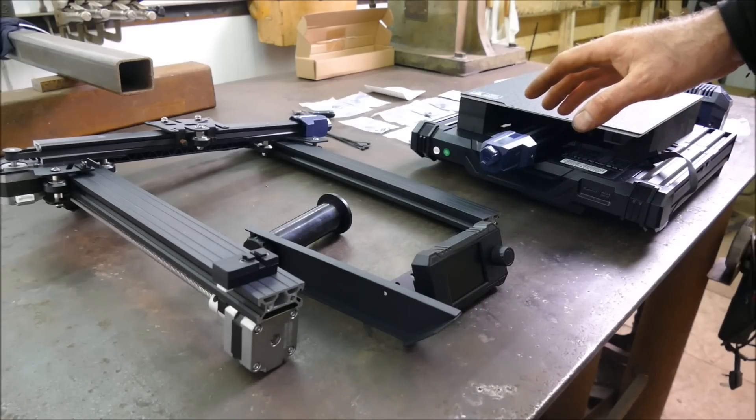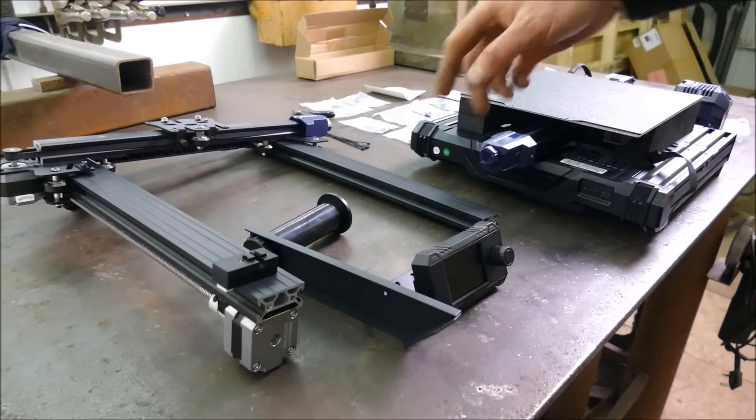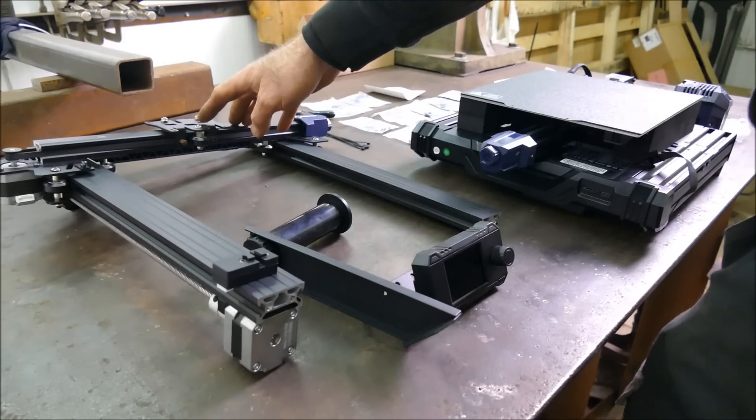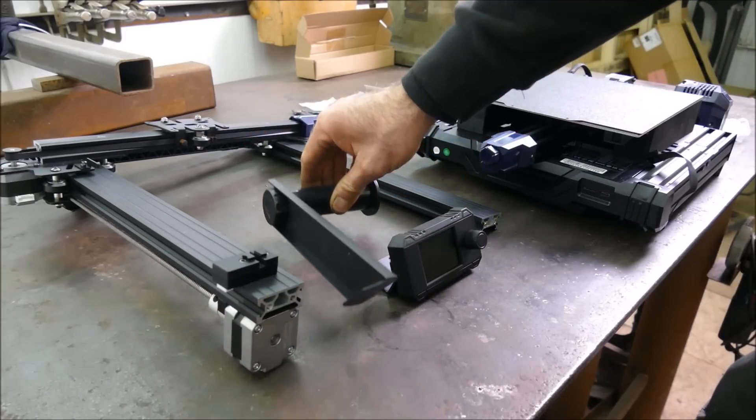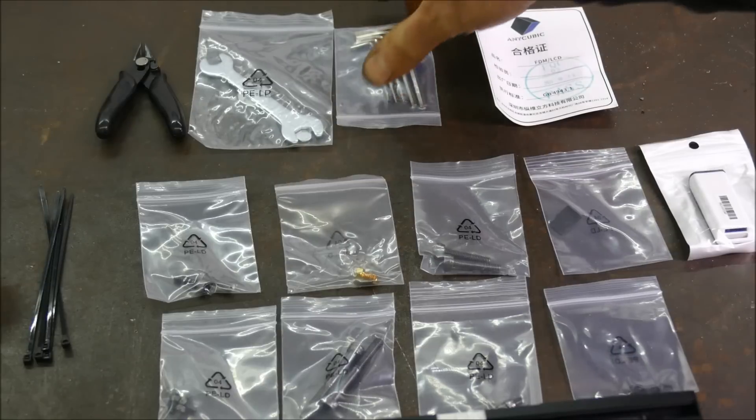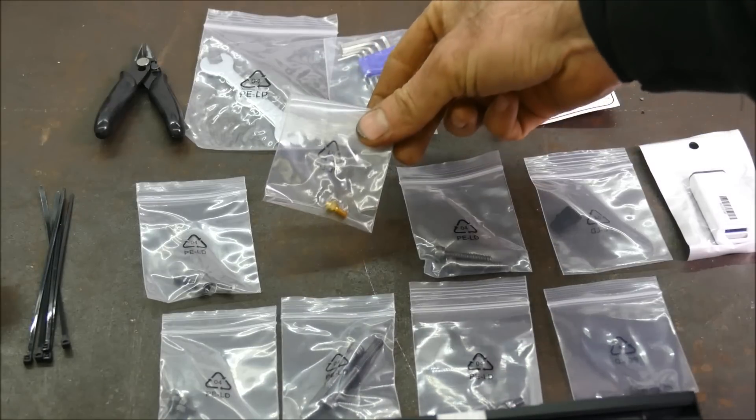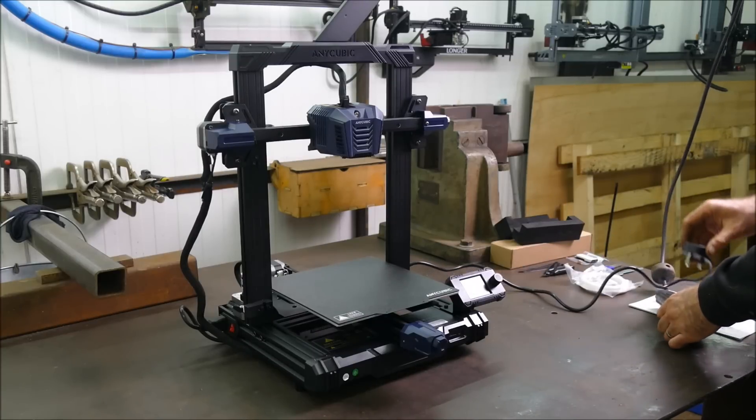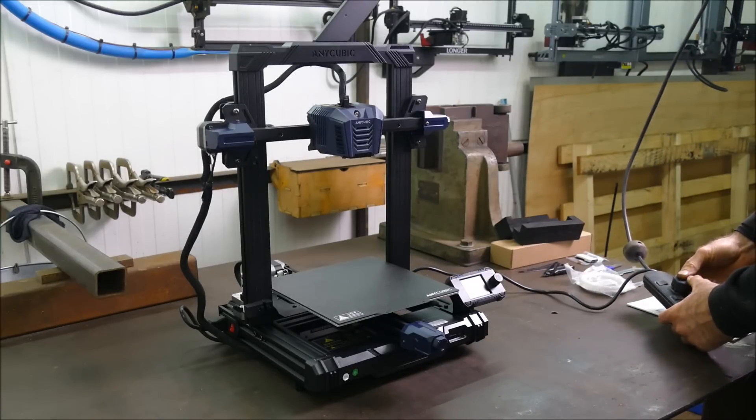Straight out of the box, things are looking great. It comes as just four pieces: the Y-axis on the base, and the X and Z-axis. The other two parts are simply the spool holder and the screen. It came with a nice selection of tools, spare nozzle, and all the bolts are separately packed into their sizes. Within 20 minutes, I had this thing together and ready to plug in and turn on.